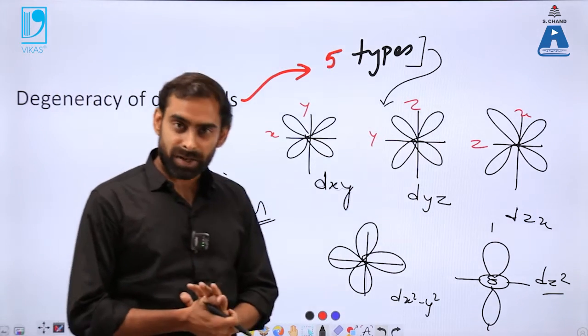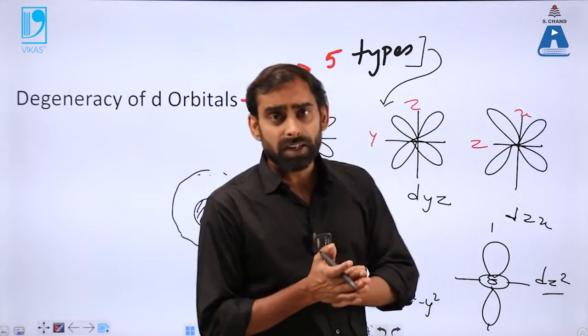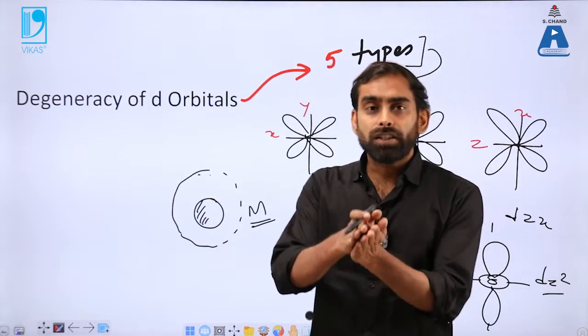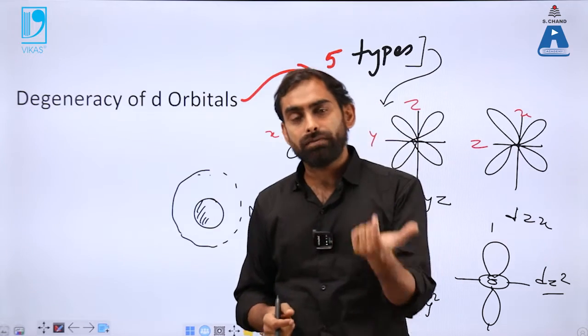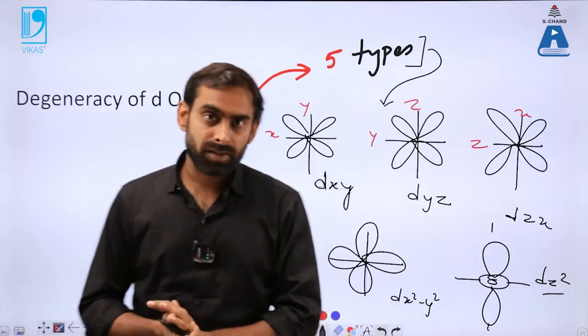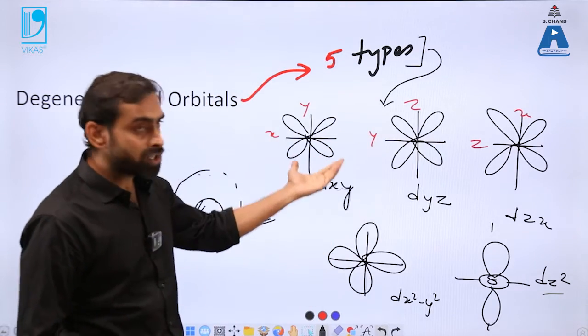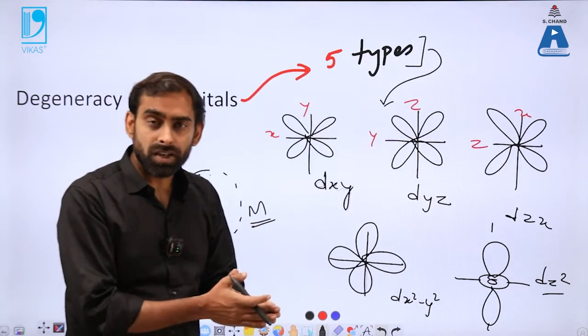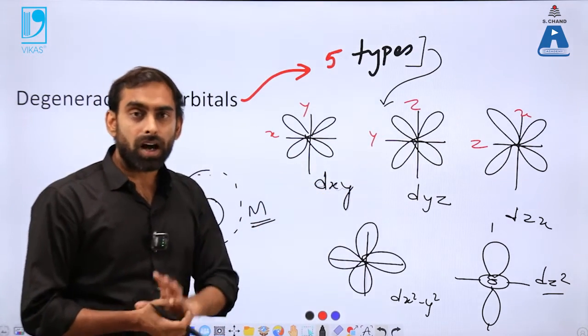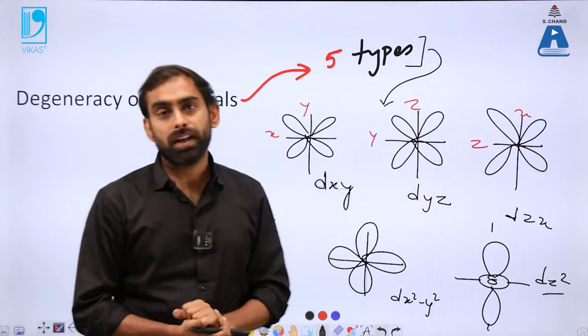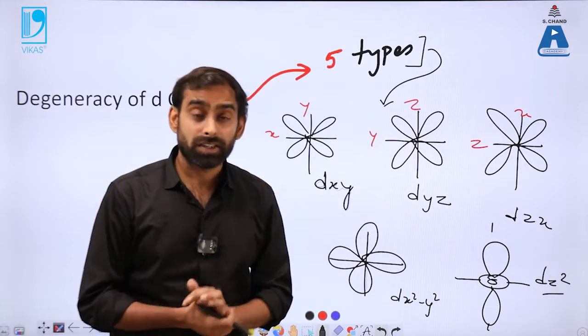But now what is crystal field splitting? Crystal field splitting is basically the splitting of energy levels of these five orbitals. So two out of these five vary in the energy. Their energy level changes under the influence of certain external agents. Now what are these external agents?